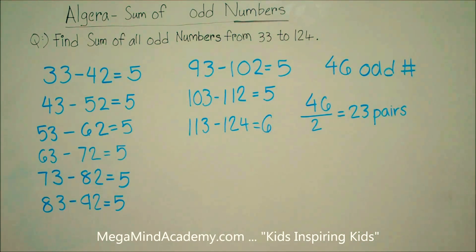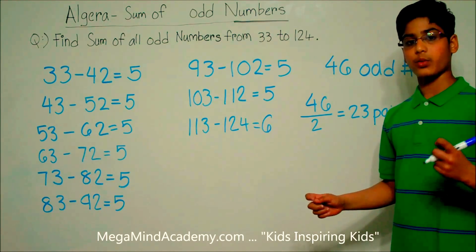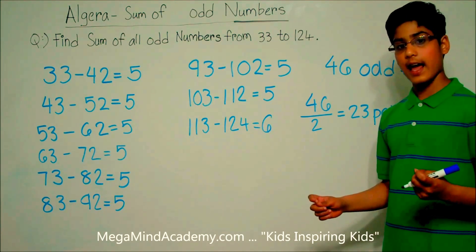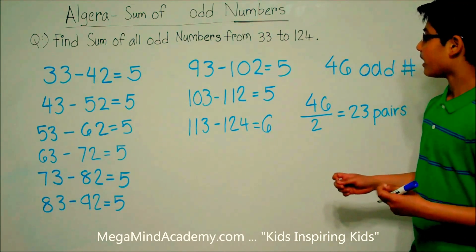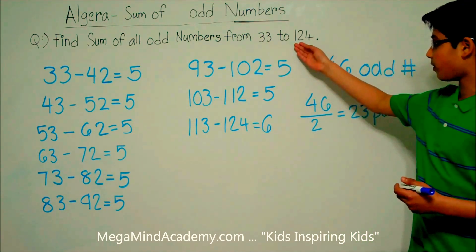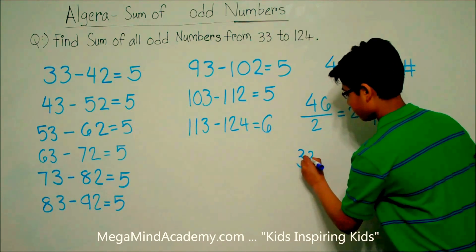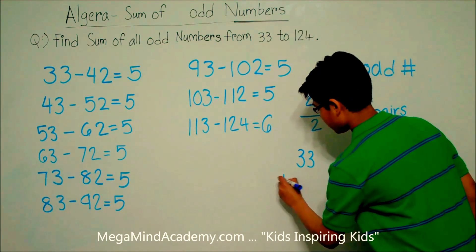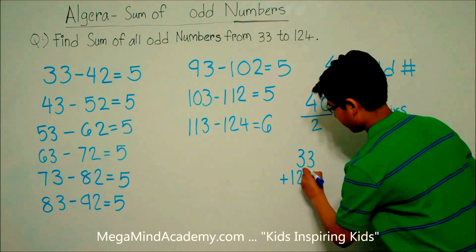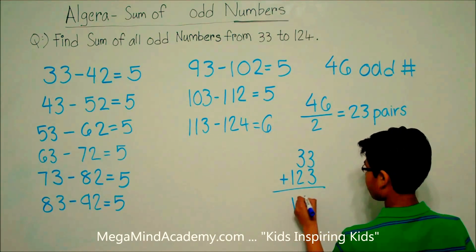Now, to solve the next part of this problem, we need to add together 33 and 123, because 123 is the last odd number from 33 to 124. So, 33 plus 123 is equal to 156.